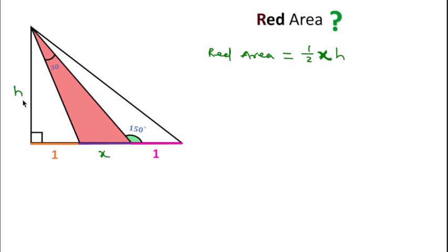Since this angle is 150 degrees, by linear pair we can say this adjacent angle will be 30 degrees. This angle is 30 degrees and this angle is 30 degrees, so this means the remaining angle in the triangle will be 120 degrees.